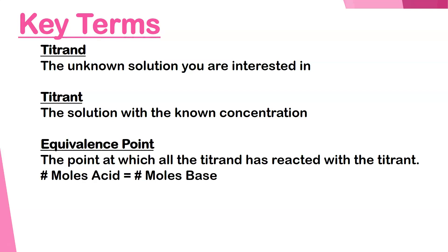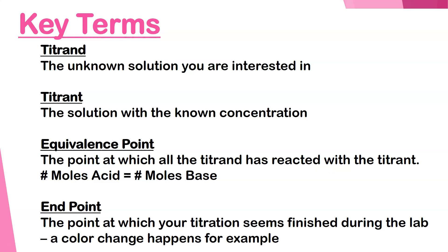The equivalence point is the point at which all of the acid has reacted with all of the base — your moles of acid equal exactly your moles of base. If you do your titration perfectly, you will get very close to your equivalence point. But a lab's never perfect, so we call the end point the point at which it looks like in the lab your titration is done. In a perfect universe, the equivalence point and the end point would be identical, but if we do a really good job, they should be super close together.